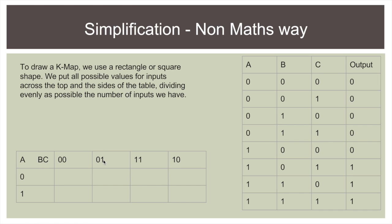So from 0 1, again, we only want to change one variable. So we don't go to 1 0. We go to 1 1 because here B changes but C remains the same.